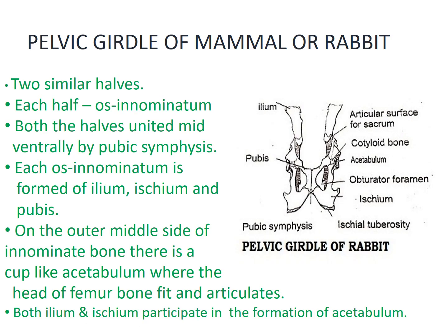Coming to the pelvic girdle of mammal or rabbit. In the case of rabbit, the pelvic girdle is a more or less H-shaped bone made up of two similar halves. Each half of the pelvic girdle is also called Os Innominatum. In rabbit, both halves of the pelvic girdle are united midventrally by the pubic symphysis, as you can see in the diagram. Each Os Innominatum is in turn made up of three bone elements: Ilium, Ischium and Pubis. On the outer middle side of the innominate bone there is a cup-like structure known as Acetabulum where the head of the femur bone fits and articulates. In mammals, both Ilium and Ischium participate in the formation of Acetabulum, but Pubis does not, because a small cotyloid bone prevents it from reaching the Acetabulum.